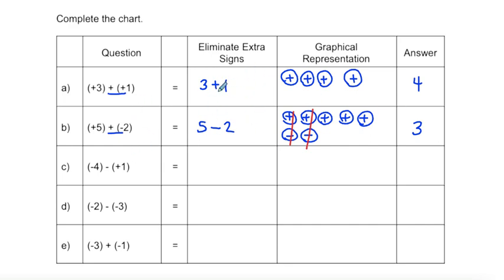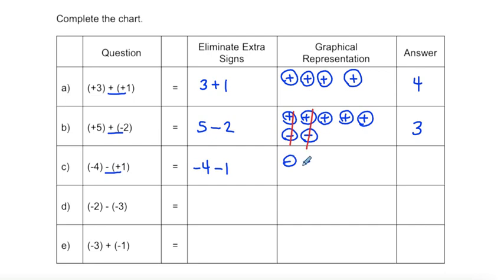Example C: starting with negative four. Looking at the signs directly beside each other — a negative and a positive — which turns into a negative, so it's negative one. This becomes negative four subtract one: one, two, three, four, five negative integers, or negative five.